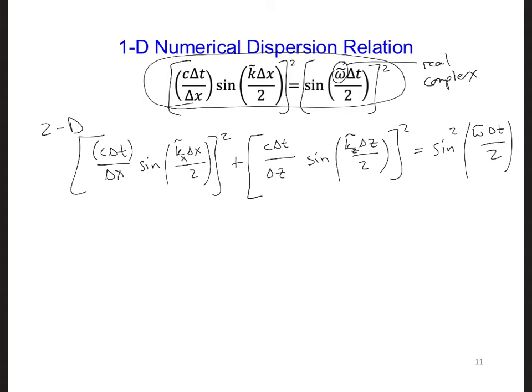In two dimensions, we can visualize the numerical wave number as a vector pointing in the direction of propagation. Then, kx tilde is the component of k along the x direction, and kz is the component of k along the z direction.